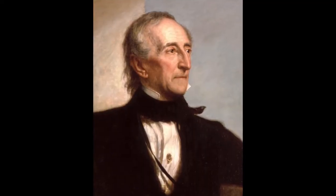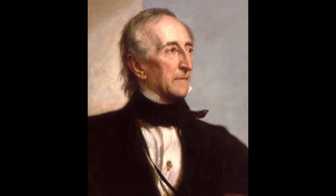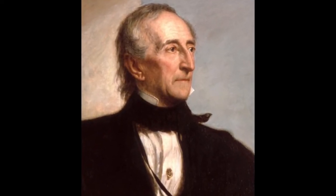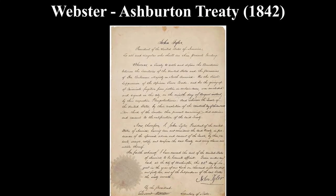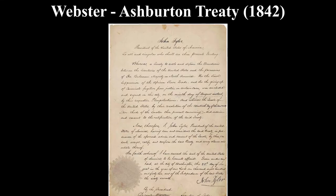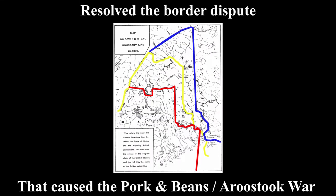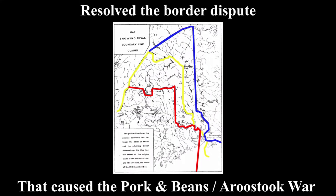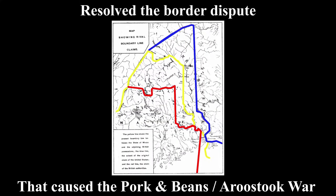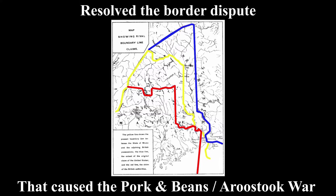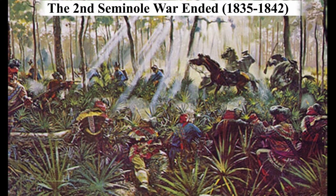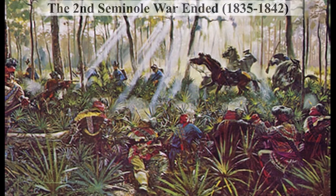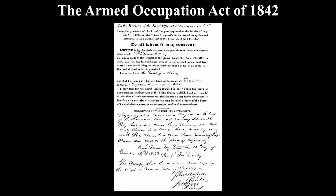Soon after, the Whigs kicked John Tyler, the president, out of their party. Meanwhile, the Webster-Ashburton Treaty was signed in 1842 and it resolved the border dispute between America and Britain, which had caused the Pork and Beans War. As well, the Seminole War finally ended in 1842 after seven painful years.